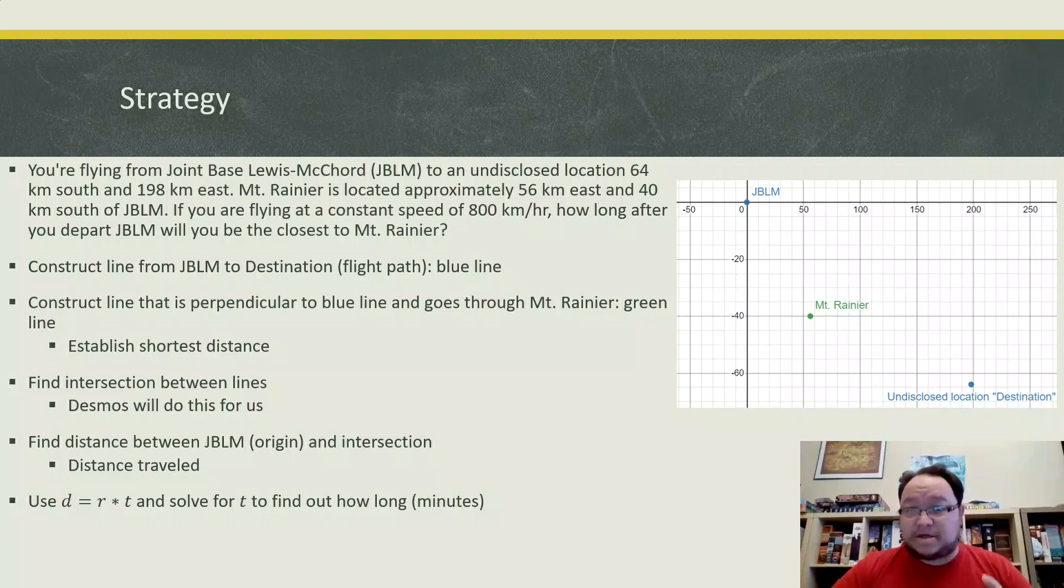One thing to note is in the message box for this, it gives it in minutes. But notice that our rate is in hours. So we're going to have to convert that over to minutes to make it work. So most of the work is going to be simply figuring out the distance for this. And then once we've got that sorted out, we're going to have to use r, which is 800 kilometers an hour. Let's go ahead and get started.